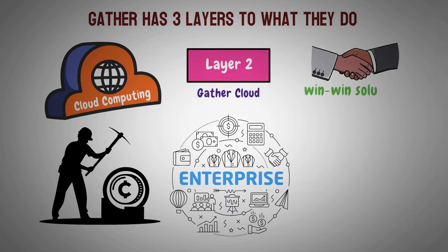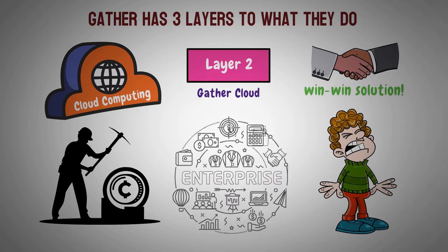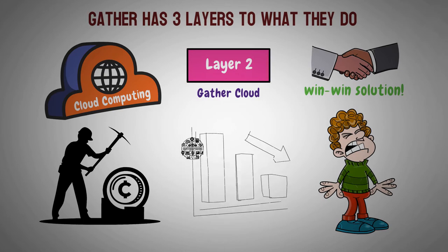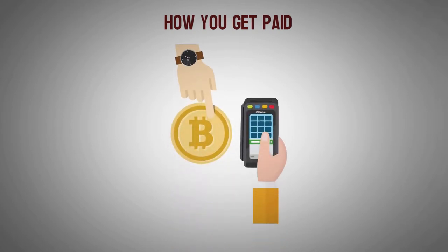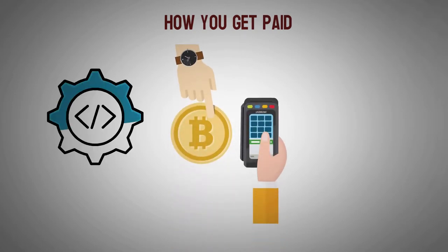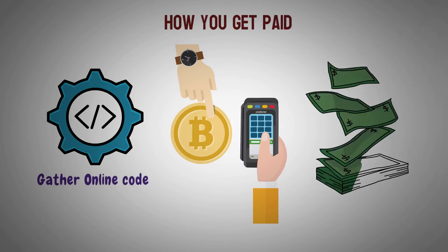As you can see, this is a win-win solution. You, as a user, get to browse websites without any ads or annoying interruptions while making money. And so do the developers. Large enterprises get to also win by lowering the cost of cloud computing. So how do you get paid? I've mentioned that you get paid with crypto, but you don't need to. By visiting a website that uses the Gather online code, you can choose to get paid in crypto or fiat, aka regular paper money.